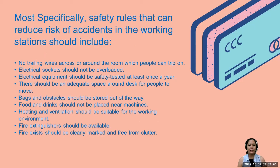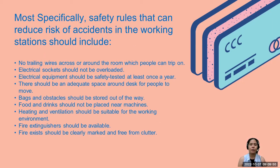Safety rules that can reduce the risk of accidents in workstations should also include: no trailing wires across or around the room which people can trip on; electrical sockets should not be overloaded; electrical equipment should be safety-tested at least once a year; there should be adequate space around desks for people to move; bags and obstacles should be stored out of the way; food and drinks should not be placed near machines; heating and ventilation should be suitable for the working environment; fire extinguishers should be available; and fire exits should be clearly marked and free from clutter.